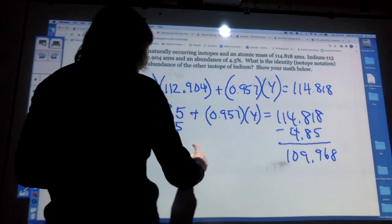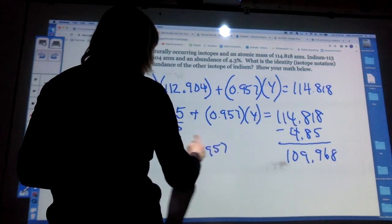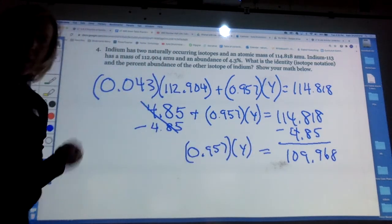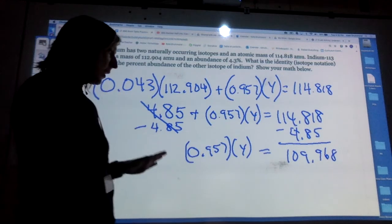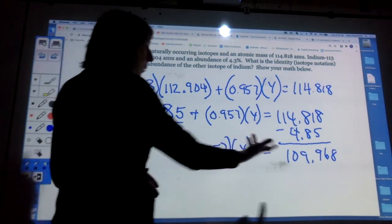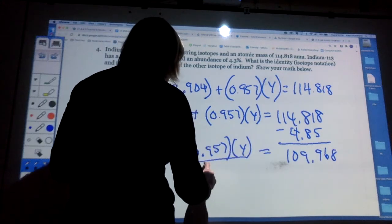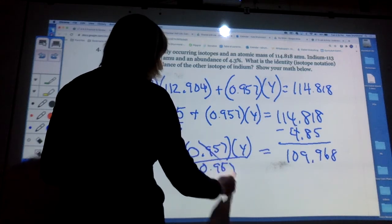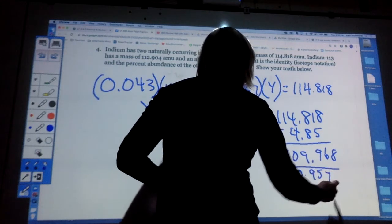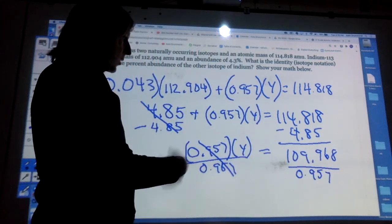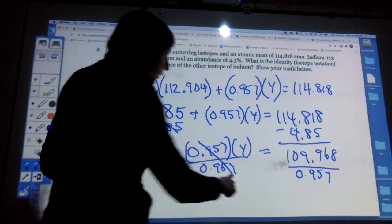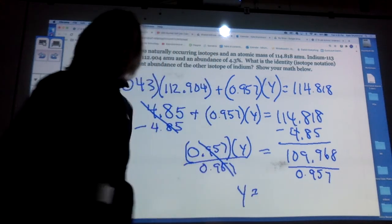So now I'm to the point where I can do one last step to isolate the variable. So I'm going to undo this multiplication and divide both sides by 0.957. And then when I get my answer, 109.968 divided by 0.957, the mass is, I have to check it, 114.909 amu.